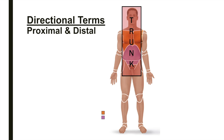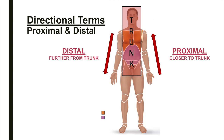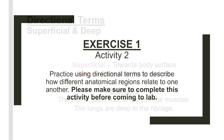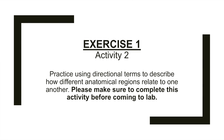Proximal and distal are terms used primarily to locate structures of the limbs. Proximal describes something that is nearer in proximity to the trunk, while distal describes something more distant or further away from the trunk. The elbow is proximal to the wrist; the toes are distal to the knee. Superficial structures lie more toward the body surface, while deep structures lie further away from the body surface. In activity two, you'll practice using directional terms to describe how different anatomical regions relate to one another — please complete this before coming to lab.